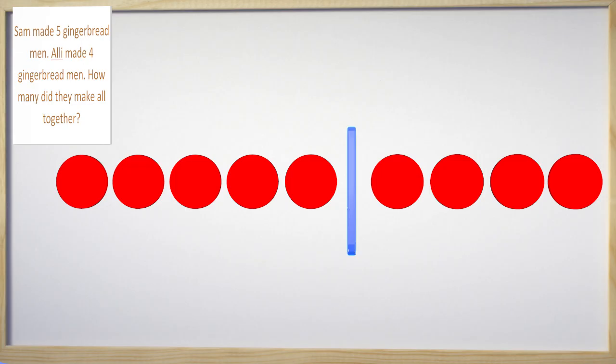We now have a circle drawing and the problem asks how many gingerbread men did they make all together. If we count all the circles, we get how many? We get nine! There are nine gingerbread men all together. Great job!